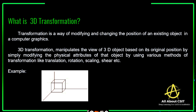First of all, what is 3D transformation? Transformation is nothing but changing an object's size, position, or shape. We are trying to change the picture into a different type. One thing to remember is that a transformation can be applied only on an existing object — it is going to modify and change the position of an existing object.